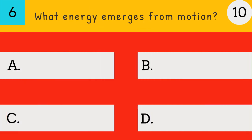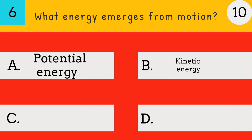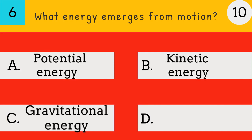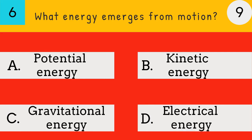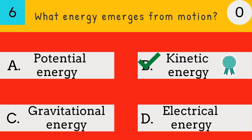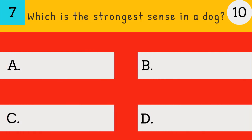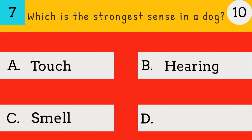What energy emerges from motion? Potential energy, kinetic energy, gravitational energy, or electrical energy? The answer is kinetic energy — kinetic energy emerges from motion.